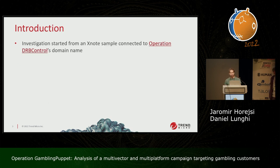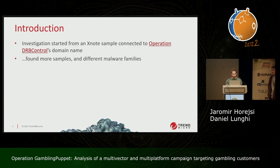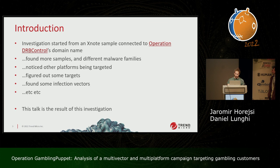It all started with a sample belonging to the Xnode malware family, which targets Linux operating system. We found that the command and control server domain name was familiar to us — it belonged to an investigation we did two years ago named Operation DRB Control, so this was a targeted attack. We researched a bit more, pivoted on that, found more samples, different malware families, and found that different platforms were targeted — Windows and Macintosh. We figured out some of the targets, some infection vectors, and decided we could do a paper, so this talk is the result of this investigation.